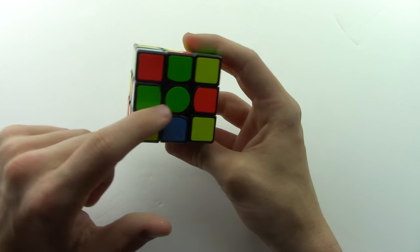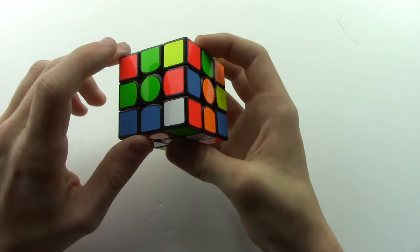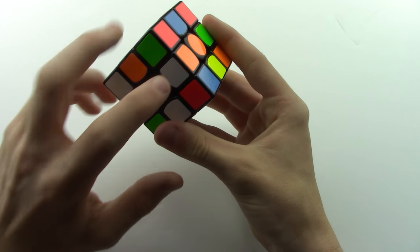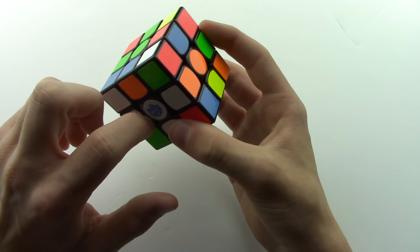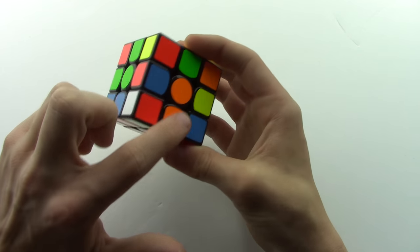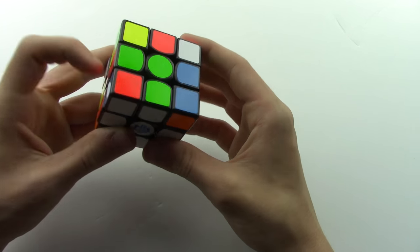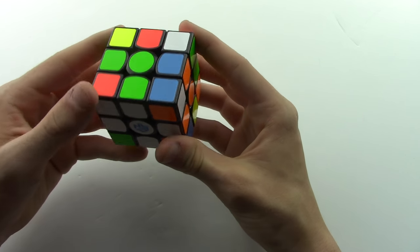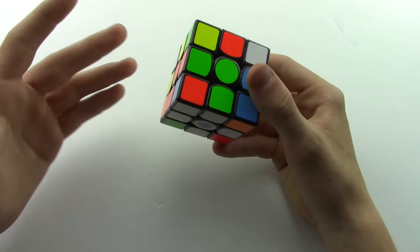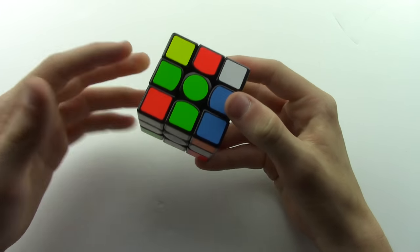And now see the green piece is already lined up right here. All I had to do is turn that down piece twice and it'll line up all the edge pieces to the correct centers and then I just turn down this green and white piece and that'll solve the white cross.